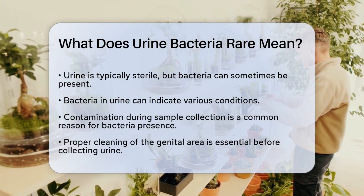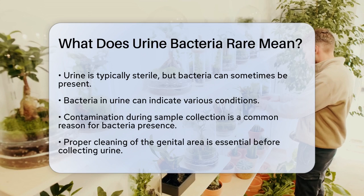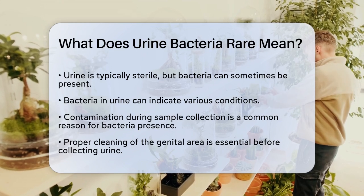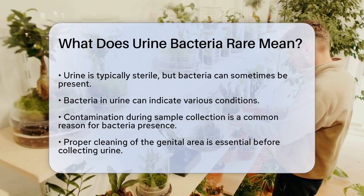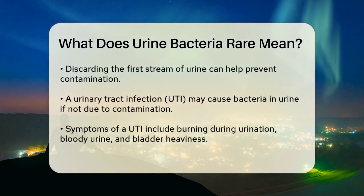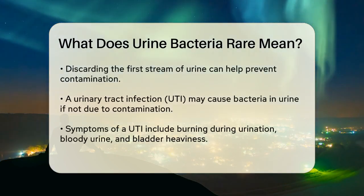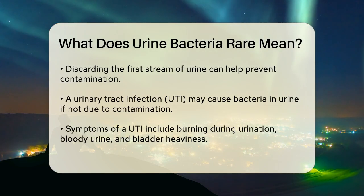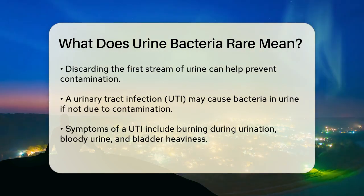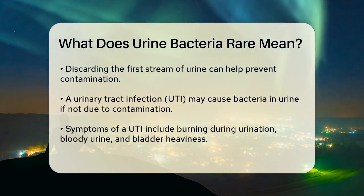This is especially true if there are many epithelial cells and mucus in the urine, but no white blood cells (leukocytes). To avoid contamination, it's crucial to clean the genital area with a baby wipe or wet toilet paper, pat the area dry, and then collect the urine after the first stream has been urinated into the toilet.